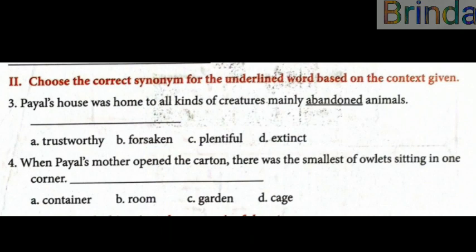Which is the right answer? 'Abandoned' means forsaken — that is the correct synonym. The answer is 'forsaken.' Next sentence: When Pile's mother opened the carton, there was the smallest of owlets sitting in one corner. The answer here is 'cage,' because the carton option is not available, so you can write 'cage.'